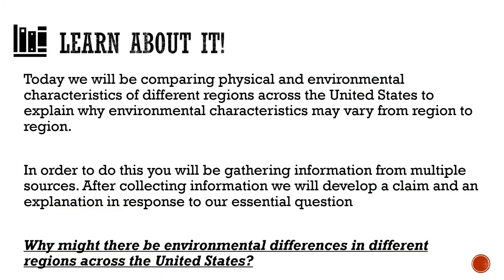Today we will be comparing physical and environmental characteristics of different regions across the United States to explain why environmental characteristics may vary from region to region. We will gather information from different sources to help develop a claim and answer our essential question: why might there be environmental differences in different regions across the United States? When we talk about environmental differences, we're thinking about why a specific area has a certain climate, wildlife, or vegetation.